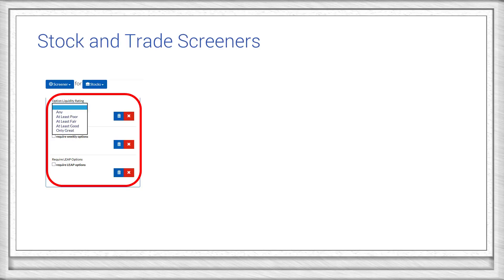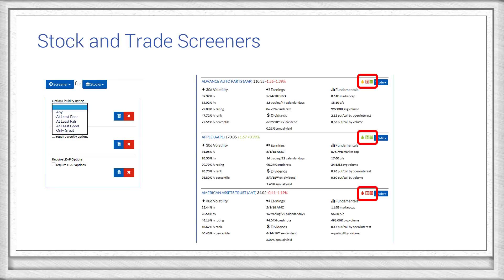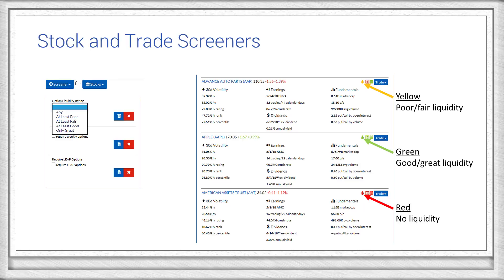There's even a filter to require leap options if you have a longer time horizon in mind. In the stock search results, you'll see some icons that help you easily understand the option liquidity for that stock. The drops are color-coded by liquidity rating: green drops indicate good or great liquidity, yellow drops have fair or poor liquidity, and red drops are for stocks that have the worst liquidity.